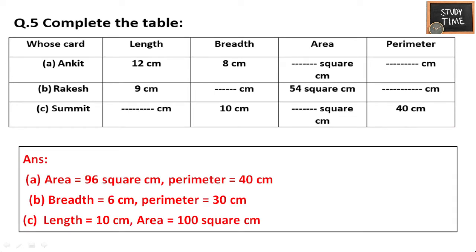Complete the table. Cards are given with length, breadth, area, and perimeter — some values are missing and you have to fill them in. For the first card: area = L into B = 12 into 8 = 96 square centimeters. Perimeter = 2 into (L plus B) = 2 into (12 plus 8) = 2 into 20 = 40 centimeters.